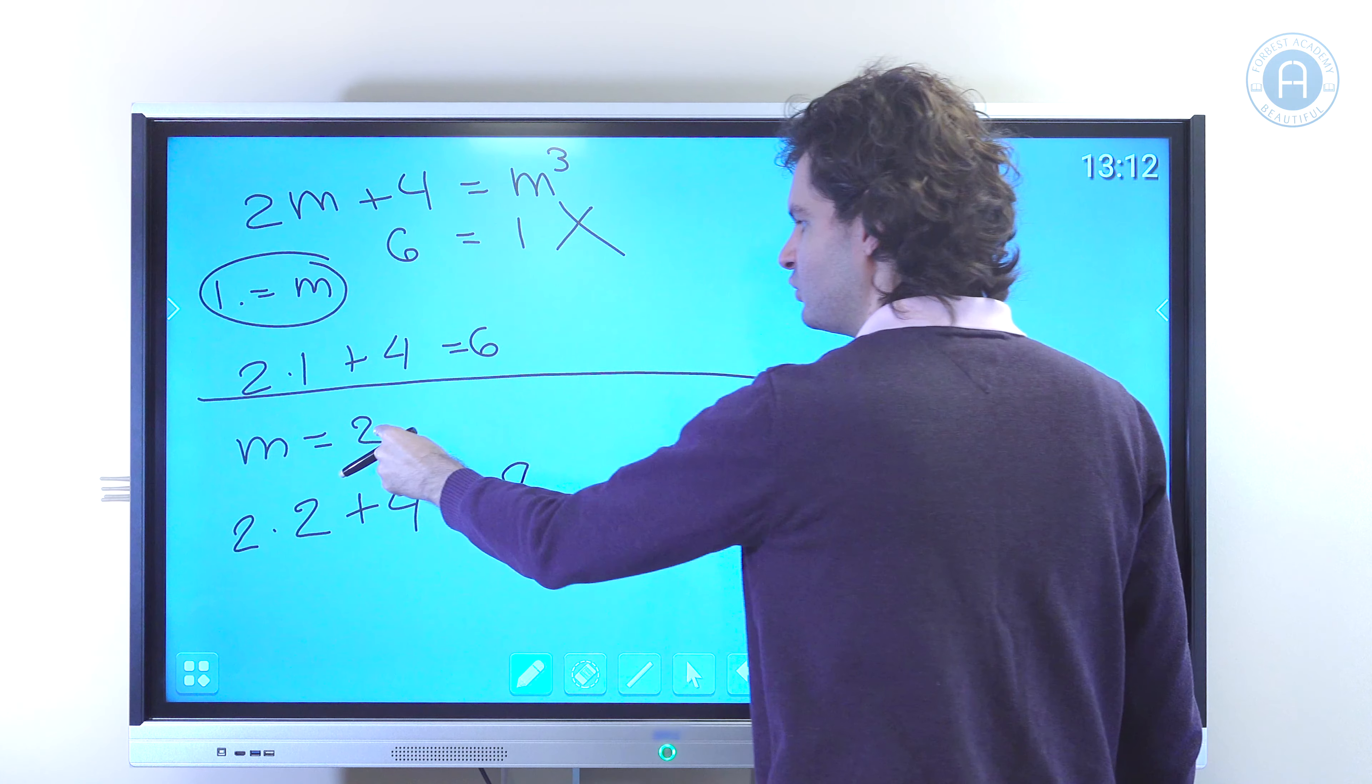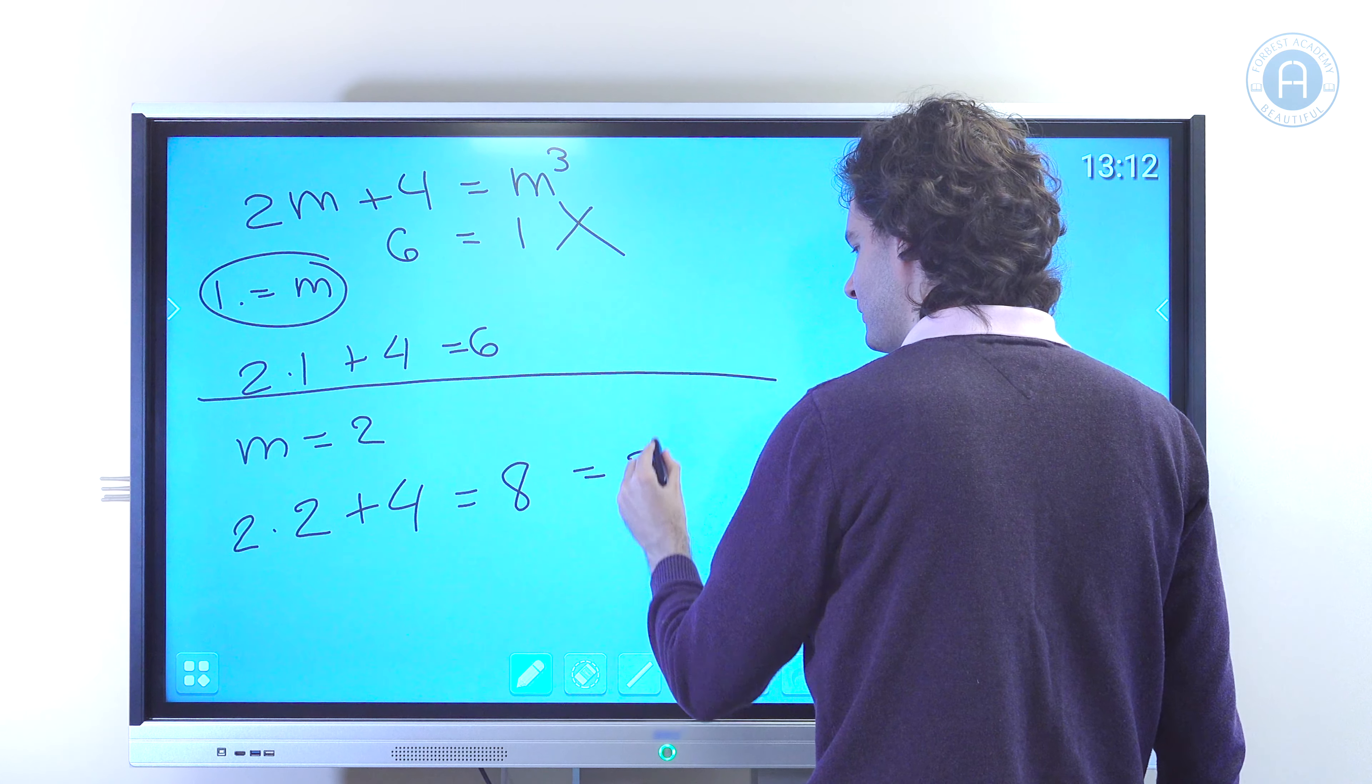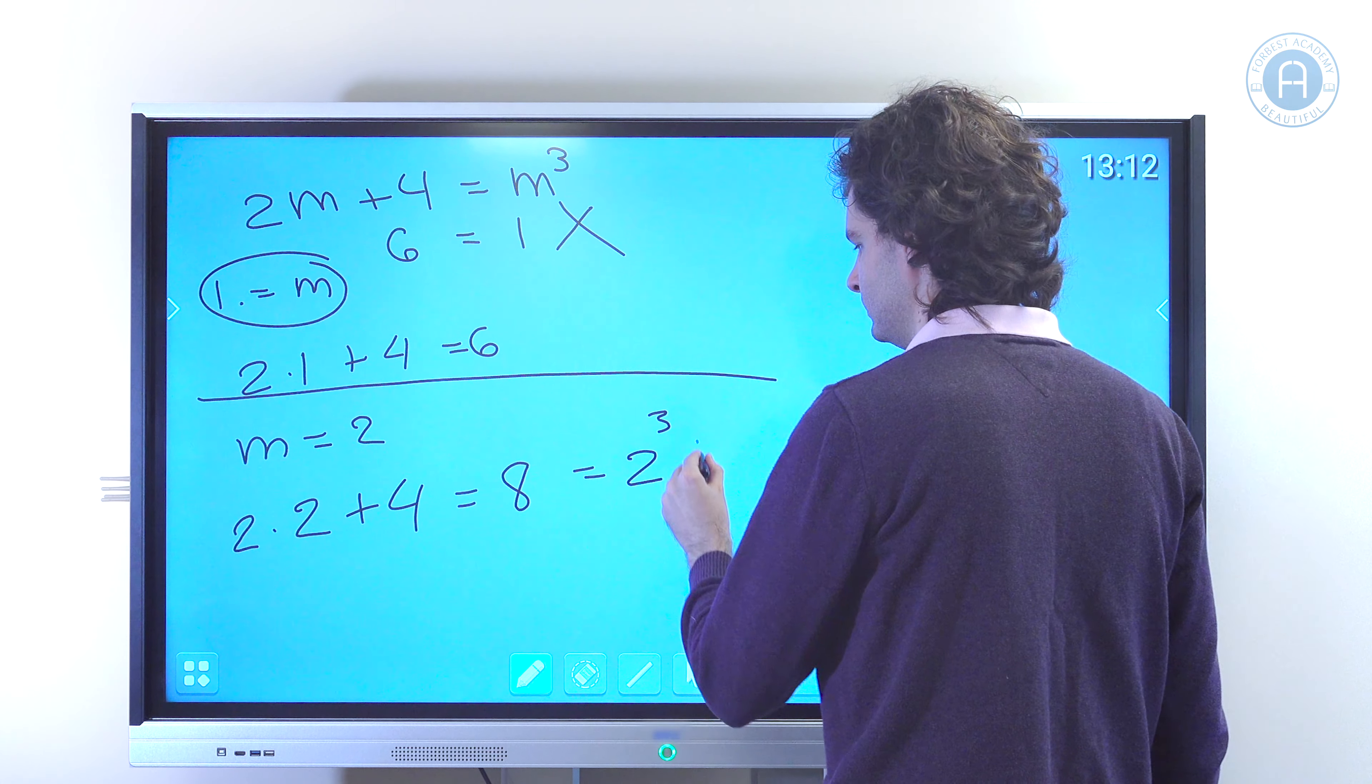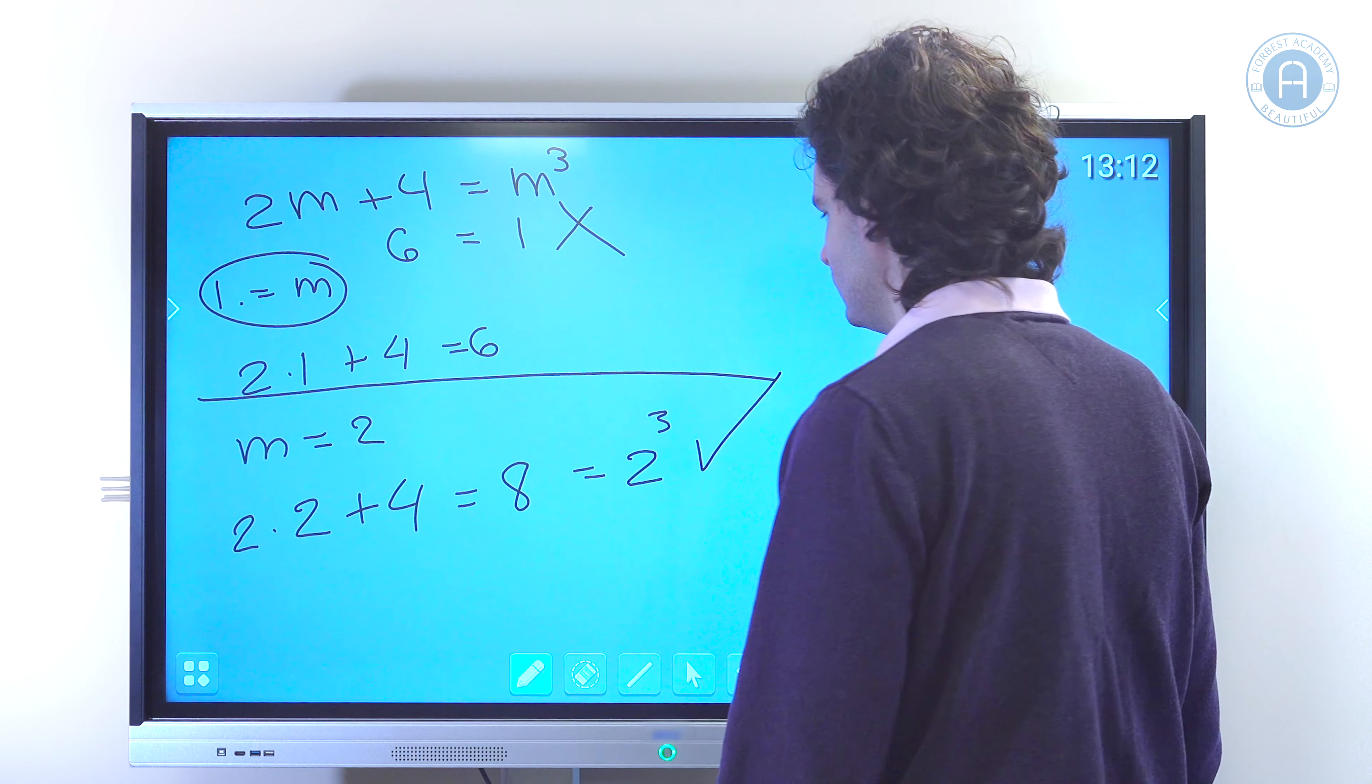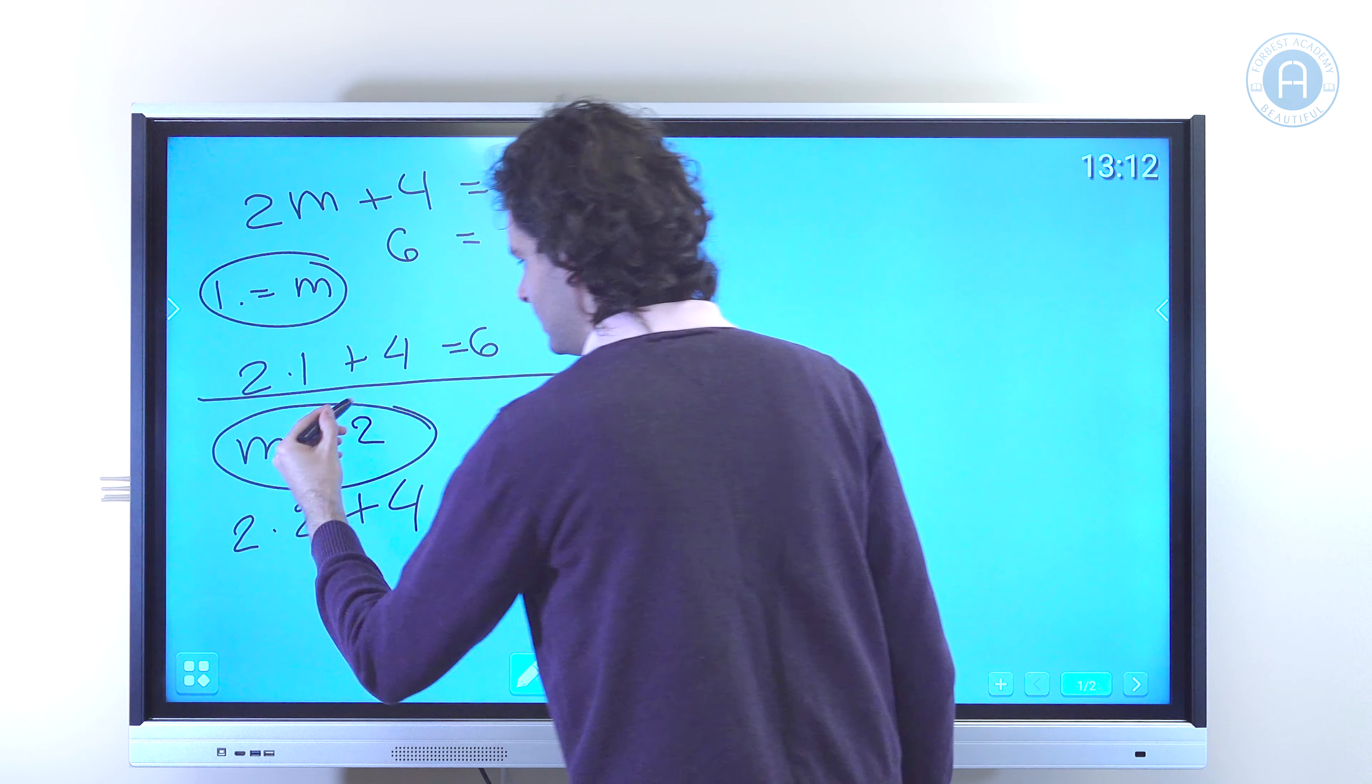That is the left hand side. The right hand side we're going to have 2 to the power of 3. So 2 to the power of 3 is 2 times 2 times 2, which is 8. Right, so the integer solution of this equation is m equals 2.